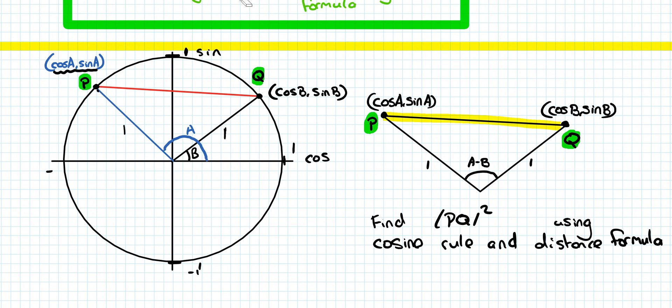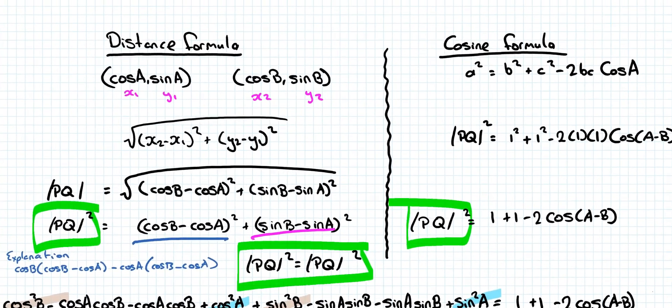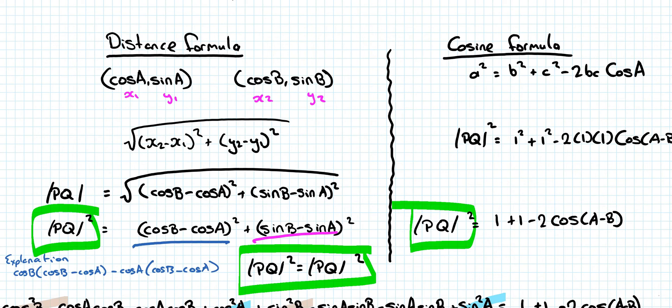And what did point number three say? Was to use the distance formula. Distance formula between here, point P and point Q. And then equal it to the distance found using the cosine formula. So find PQ squared using cosine rule and the distance formula. So I like to do this in tandem beside each other. So on the left-hand side, I'll talk through the distance formula first. We have our two points. So cos a sin a, cos b sin b.